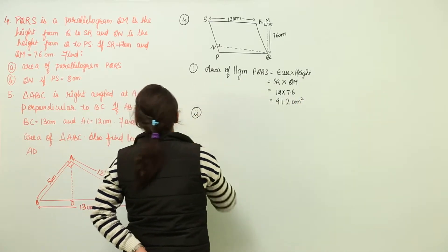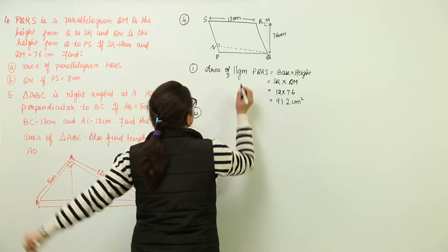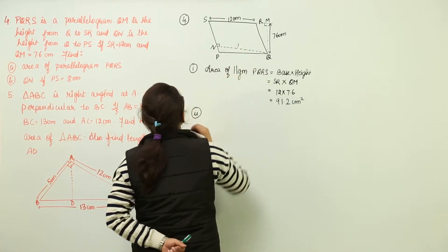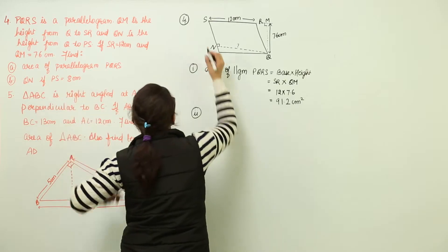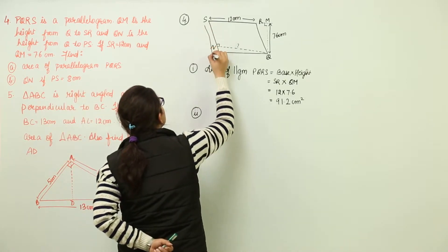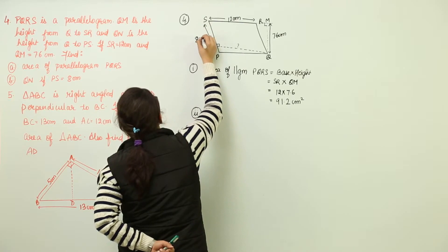Now the next step is finding QN. We have to find out the measurement of QN. If PS is given to us, now the measurement of PS has been given to us, which is 8 centimeters.